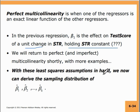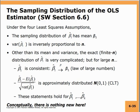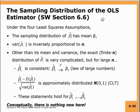With these four least squares assumptions in hand, we can now derive the sampling distribution of beta 1 hat, beta 2 hat, up to beta k hat. The idea of sampling distribution for the OLS estimator in a multiple regression model is important. You have estimated beta 1 hat through beta k hat from a given sample. If you had a different sample, you might have gotten a different value of beta 1 hat.